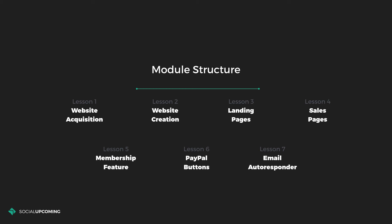Lesson number seven will be about email autoresponders, which is one part of what we will cover in module five on growth and automation, and how you can use emails to boost your business and build a tighter, more reliable relationship with your customer segment.